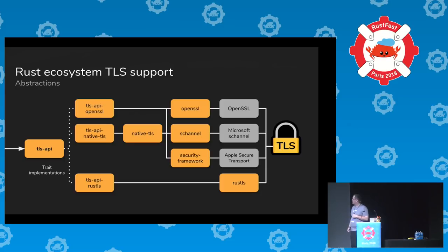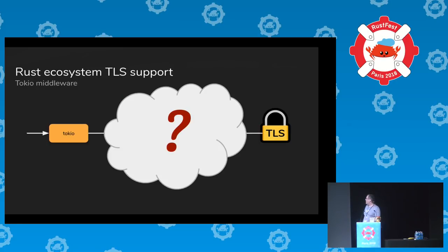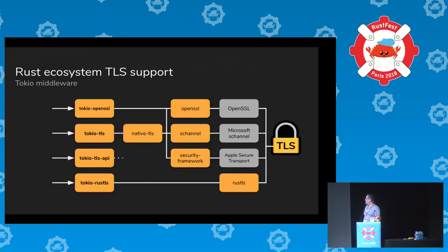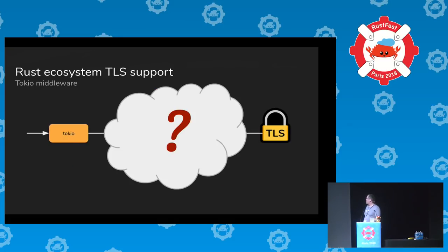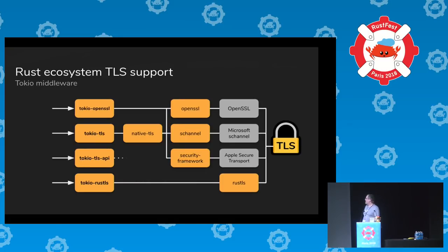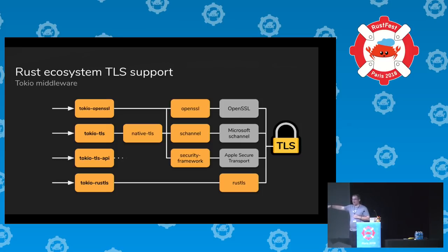There's slight overlap between tls-api and native-tls — both provide a generic abstraction over TLS, just at different levels. It would be good to fix, though probably not worth it now given how many native-tls users there are. Then there's Tokio integration — another level of complexity — with crates that glue Tokio to OpenSSL, native-tls, the tls-api sub-graph, and Rustls.